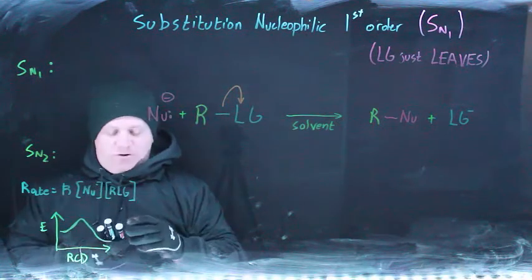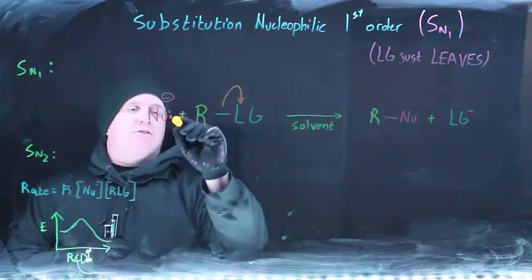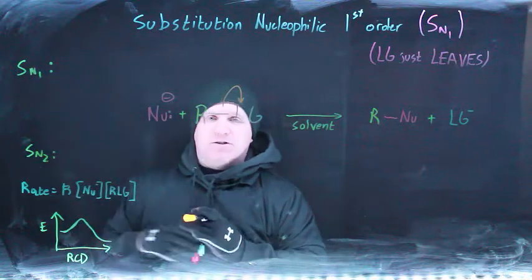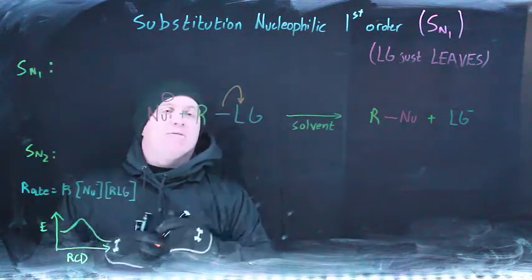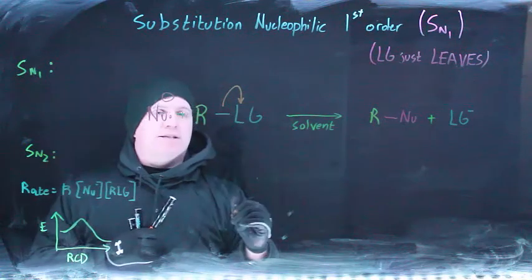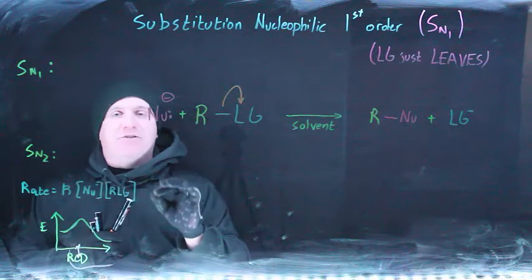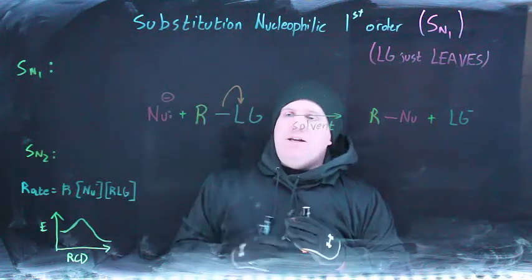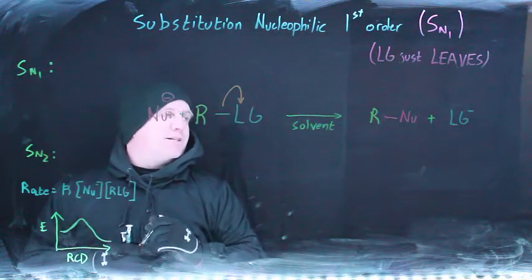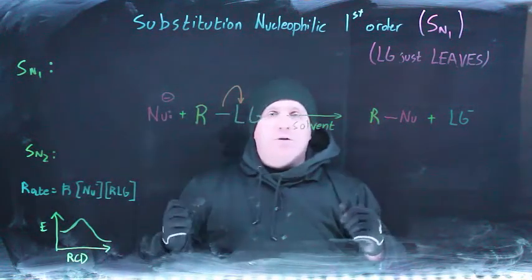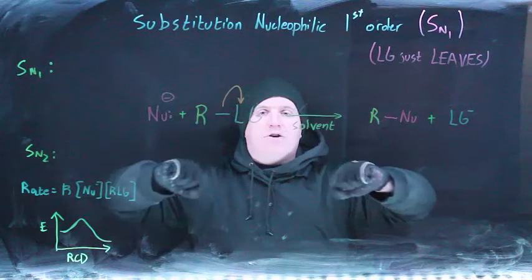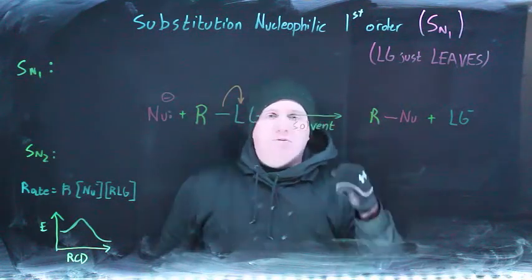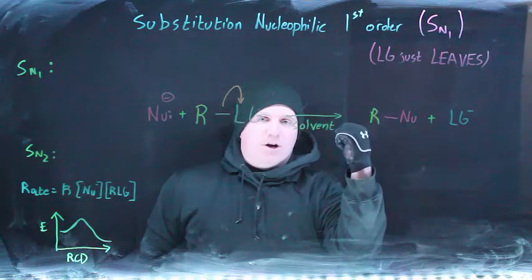Both reactions depend on a nucleophile, though in subtly different ways. In SN2, the nucleophile had to attack the substrate to cause the leaving group to leave. One of the main differences between SN1 and SN2 is the order of operations. Both need a good leaving group, but the key image is: SN2 involves a collision between the nucleophile and the substrate, whereas SN1 has the leaving group leave first on its own.